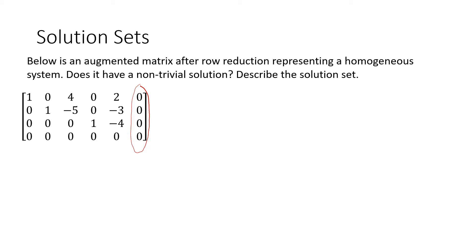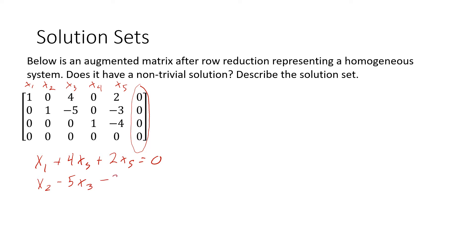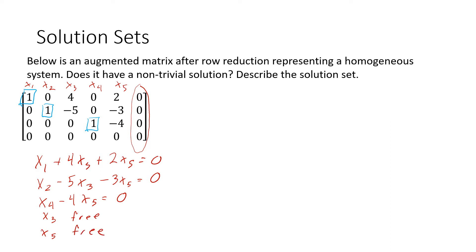We're going to rewrite these equations, one for each row. We have x1 plus 4x3 plus 2x5 equals zero, noting that we have five variables — five columns gives us five variables. Our second equation gives x2 minus 5x3 minus 3x5 equals zero. Our third gives x4 minus 4x5 equals zero. These are our leading entries, our pivot entries, which means x3 is free and x5 is free. The others are basic variables.